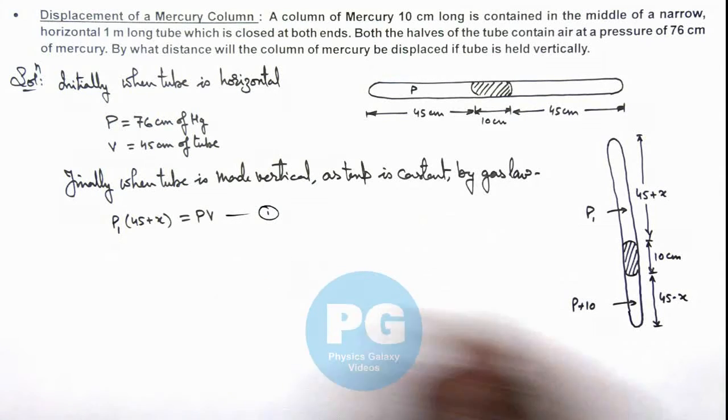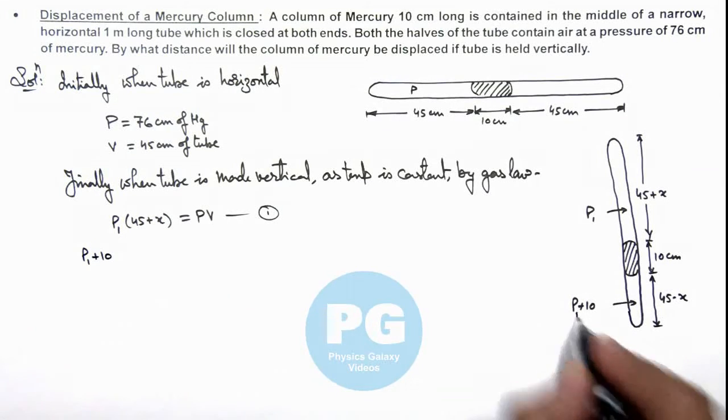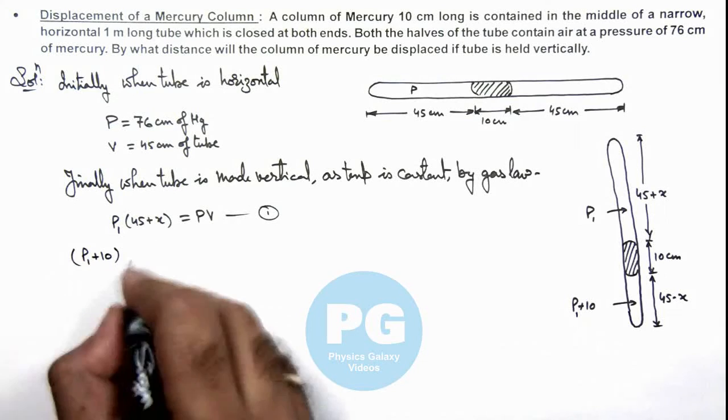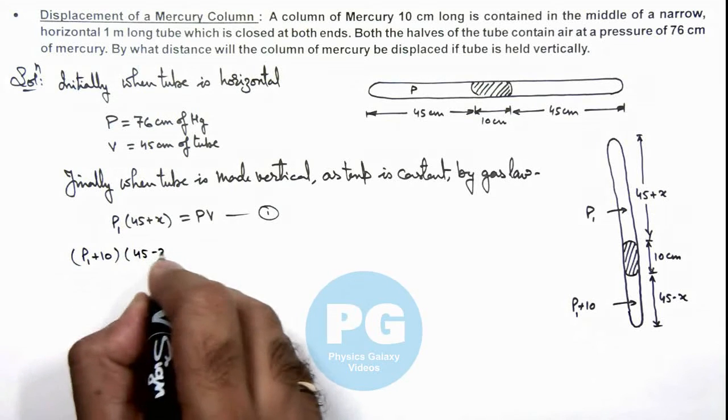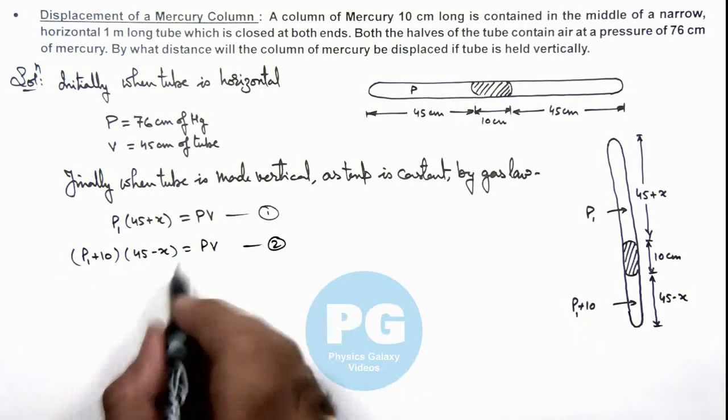And second equation for the lower part we can write p1 plus 10 multiplied by 45 minus x is equal to same p v. Now from these two equations.